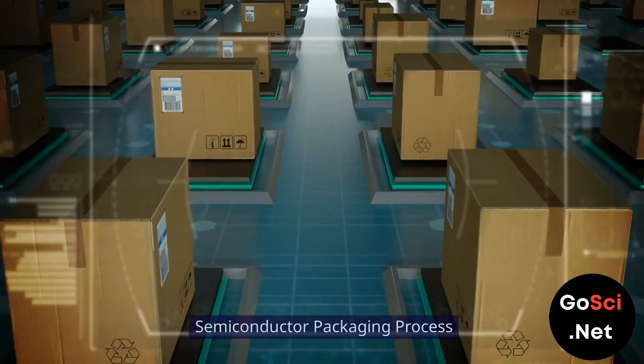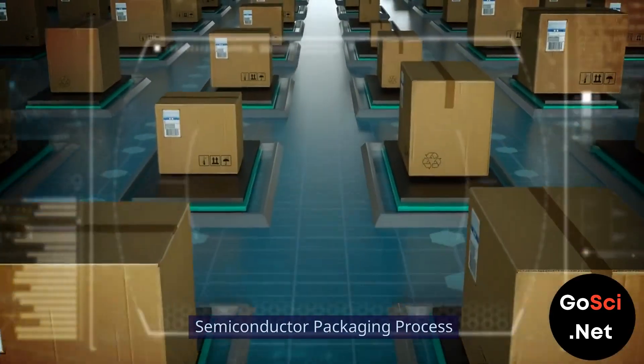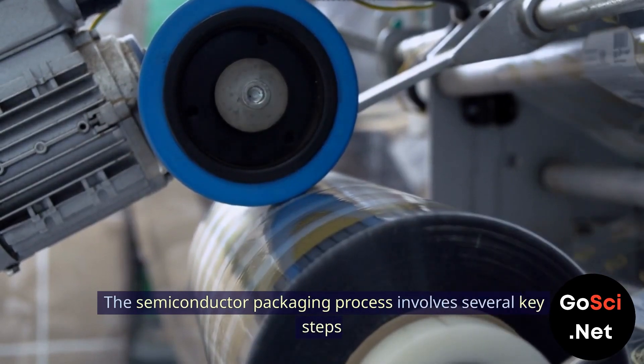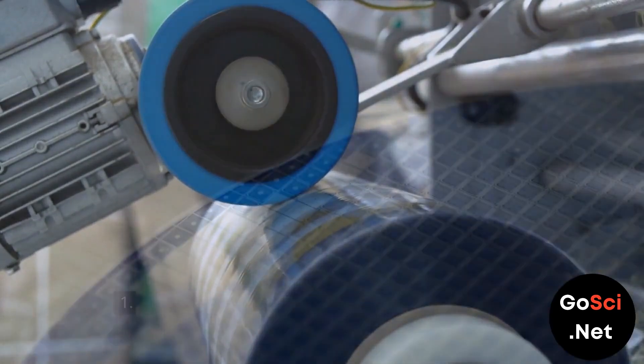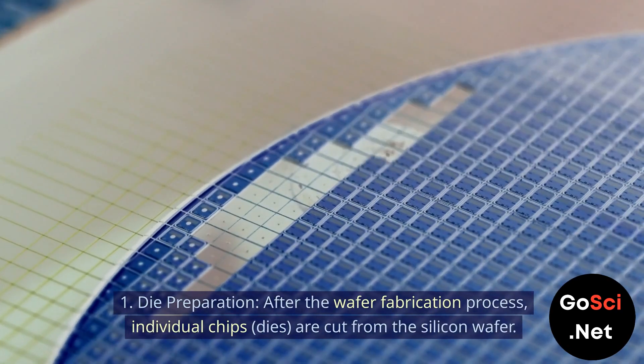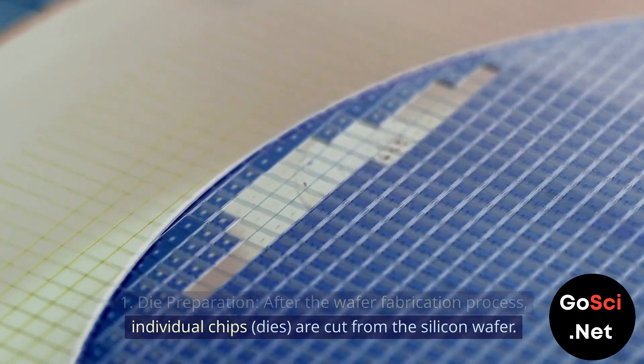Semiconductor Packaging Process. The semiconductor packaging process involves several key steps. 1. Die Preparation. After the wafer fabrication process, individual chips, or dies, are cut from the silicon wafer.